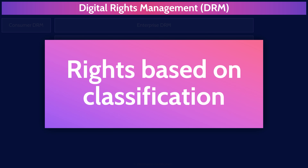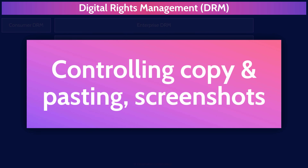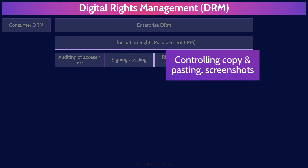IRM systems can enforce specific permissions and access based on the classification of a document. IRM systems can control all sorts of permissions including copying and pasting of text, taking screenshots, printing, forwarding or sharing, editing or modifying, or even restricting access after a certain date or time. Fundamentally, IRM systems provide organizations with very granular control over how sensitive documents and data are accessed, stored, and shared.